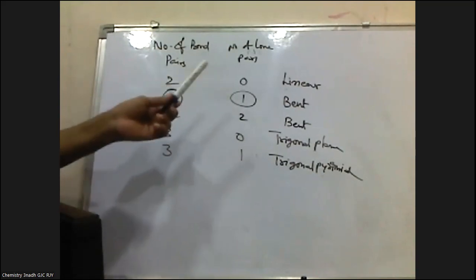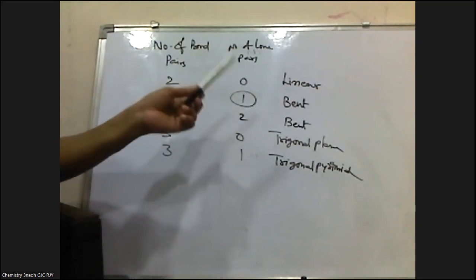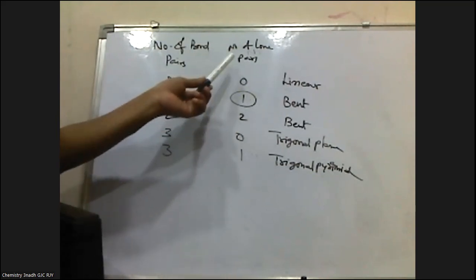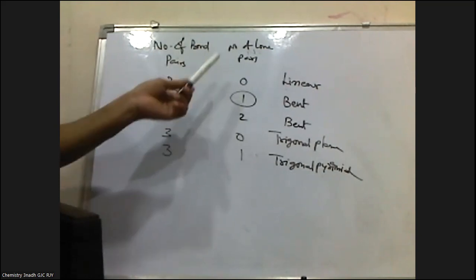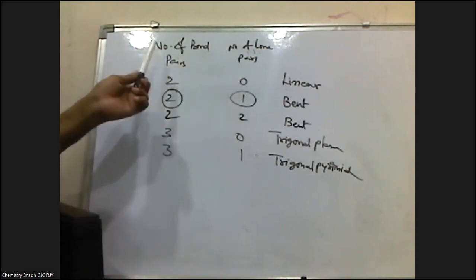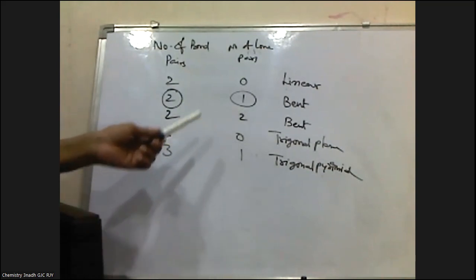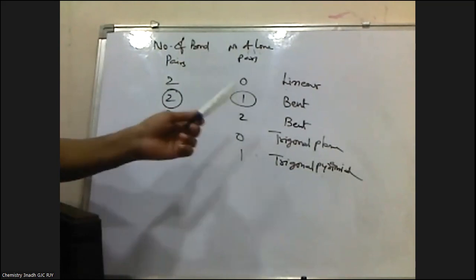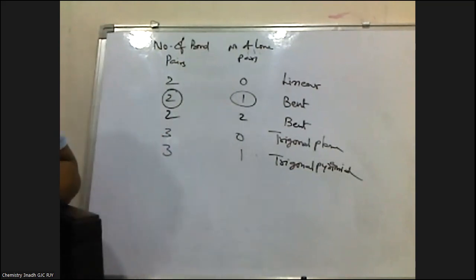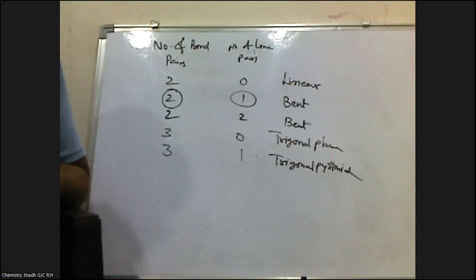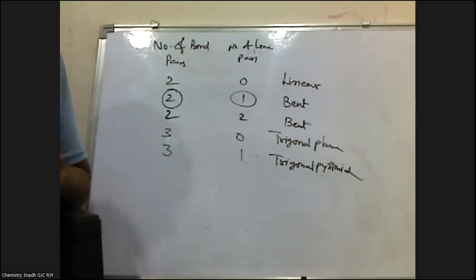The ideal shape deviates based on the number of lone pairs. If there are no lone pairs: two bond pairs gives linear, three bond pairs gives trigonal planar, four gives tetrahedral. As we increase the number of lone pairs, shapes deviate from their ideal shapes. Thank you for watching Chemistry Classes. Please like, share, and subscribe the channel. This topic is most important for the intermediate public examination.